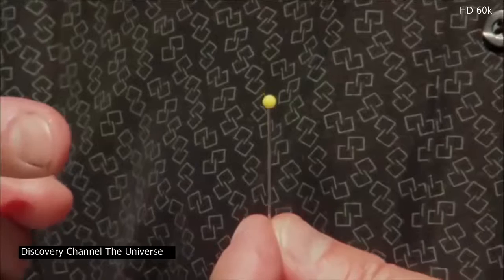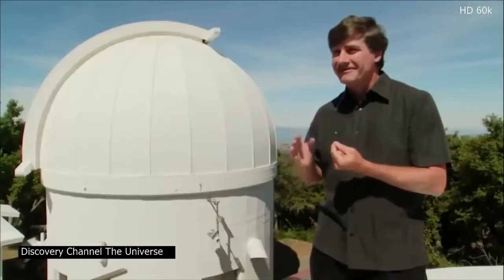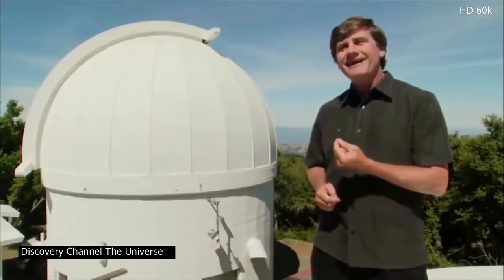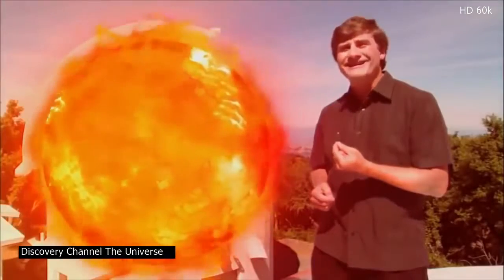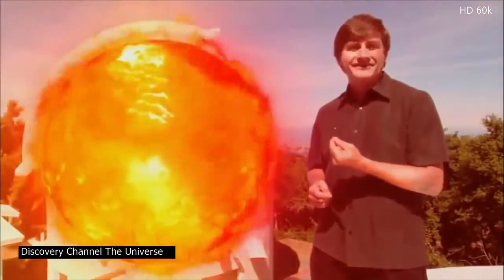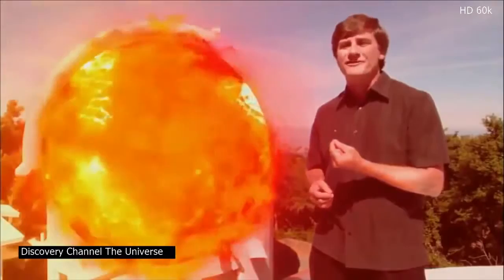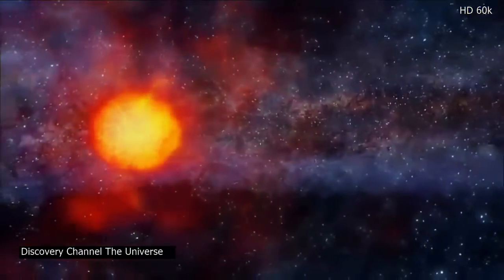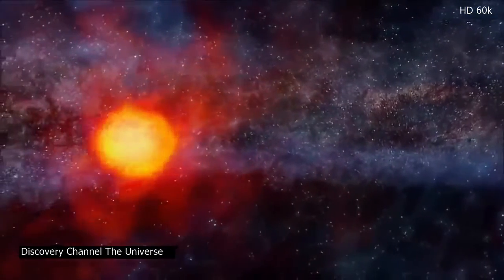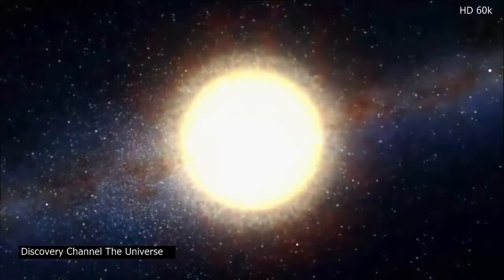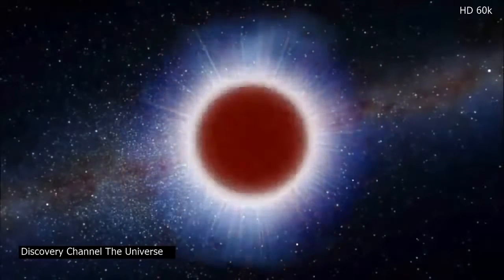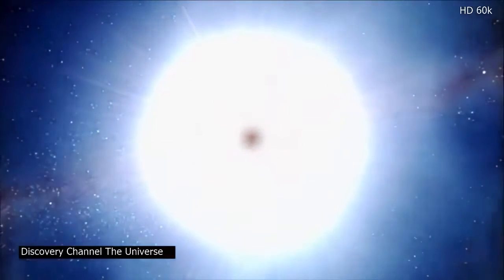Suppose our sun, which is over a hundred times the diameter of the Earth, were scaled down to the size of this little yellow pinhead here, less than an eighth of an inch in diameter. So we're really scaling down the sun a lot. In that case, the largest stars, the red supergiants, would be about the size of this telescope dome behind me. They're huge compared with the sun and yet the sun itself is already huge compared with the Earth. Supergiant stars, whether blue, yellow or red, are collectively called evolved massive stars. That means they've burnt out their nuclear hydrogen fuel and are transforming into giants that may eventually explode as supernovas.